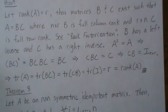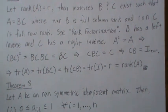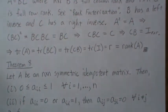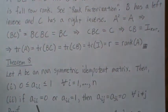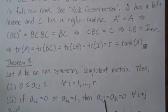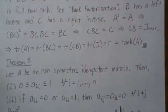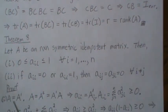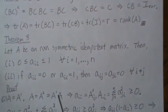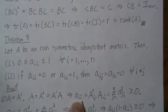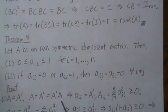Theorem eight: let A be an N by N symmetric idempotent matrix. Then the following two properties hold: each diagonal entry satisfies 0 ≤ A_ii ≤ 1, and if a diagonal entry is 0 or 1, all other entries in that row and column are zero. Since A is symmetric, A equals A transpose, so A squared equals A transpose A. Each diagonal entry equals the sum of squared entries in the corresponding column, which is always non-negative.